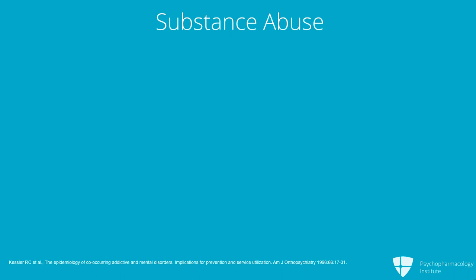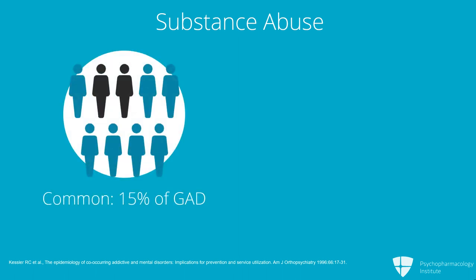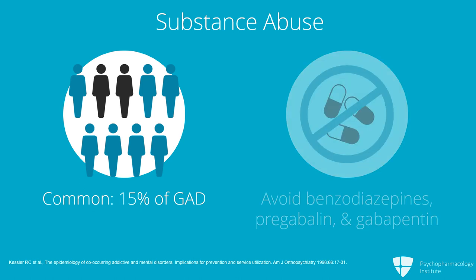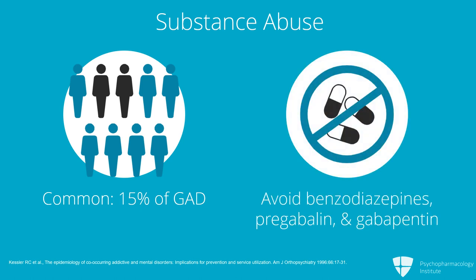The next comorbidity to discuss is active substance abuse, which is a pretty common comorbidity — some 15% of people with GAD are actively using some substance. Our recommendations differ from the standard: first, benzos are going to drop way down on the options list. Pregabalin also drops way down because it is Schedule IV and prone to abuse.